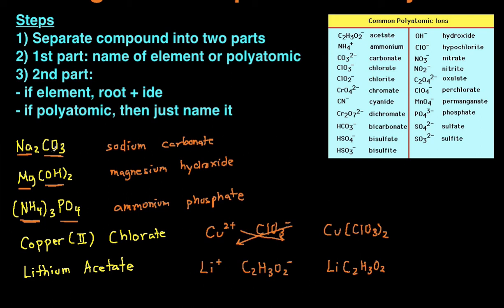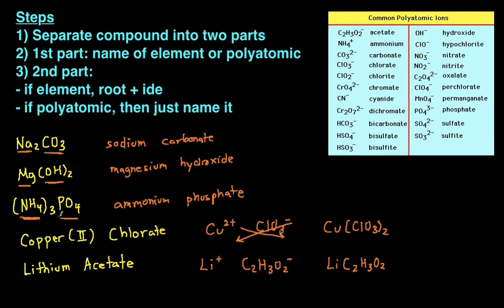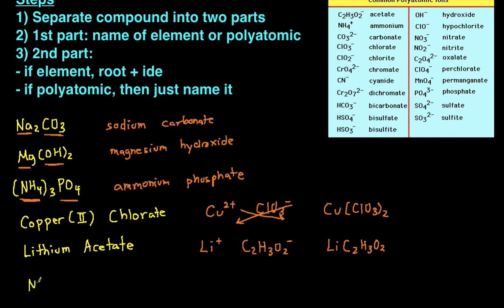And one more example, because I just realized I never really gave you an example where the second part is an element. So let's say we're working with (NH4)2S. So we break it down to two parts, the two parts are going to be NH4, and then S. So the first part, we just name it, NH4 is ammonium. And then the second part, because it's an element, we're going to add IDE to the root. So S is sulfur, but we add IDE to the root, that makes it sulfide. And then that's the name, ammonium sulfide.